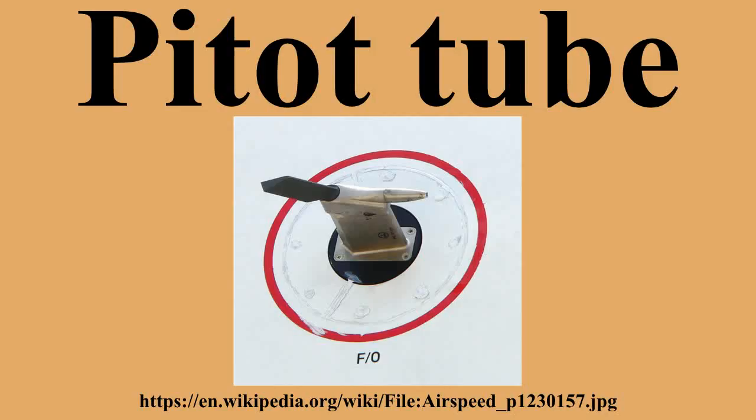The Pitot tube is used to measure the local flow velocity at a given point in the flow stream, and not the average flow velocity in the pipe or conduit. Pitot tubes on aircraft commonly have heating elements called pitot heat to prevent the tube from becoming clogged with ice.